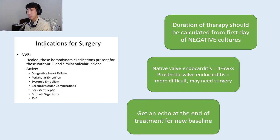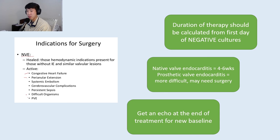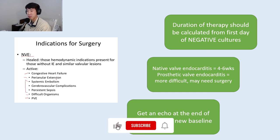Indications for surgery in native valve endocarditis include: causing congestive heart failure, periannular extension where the infection is spreading to surrounding structures near the valve, and difficult organisms, prosthetic valves, or other complications. These are some of the indications to consult surgery for possible surgical intervention.